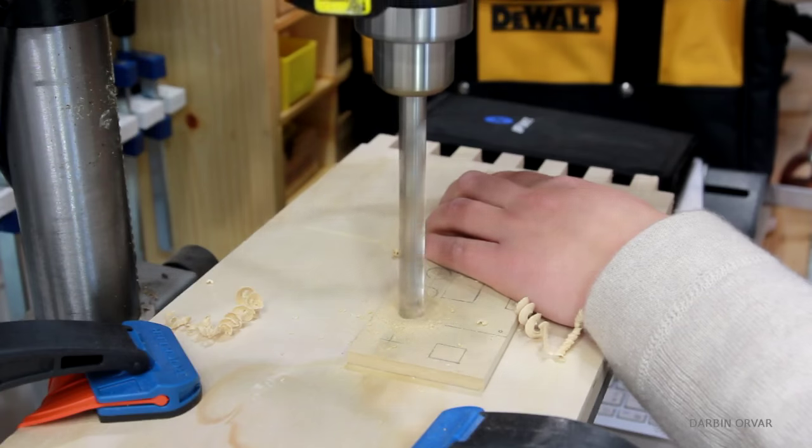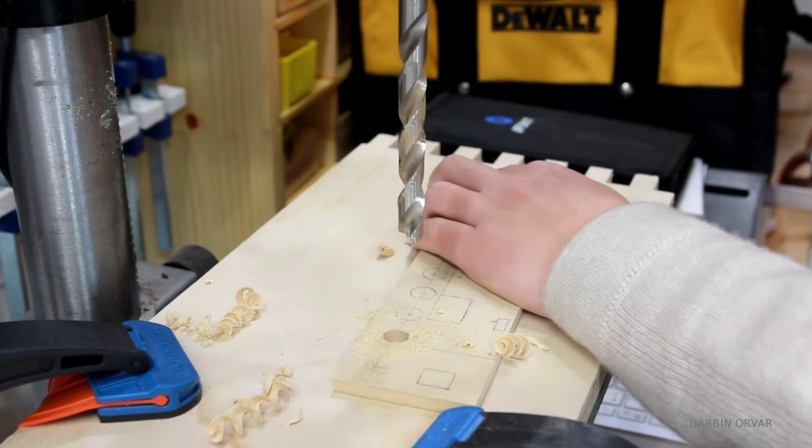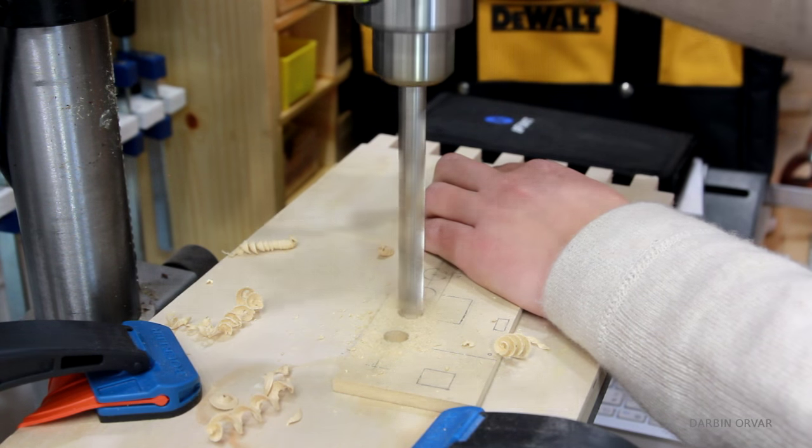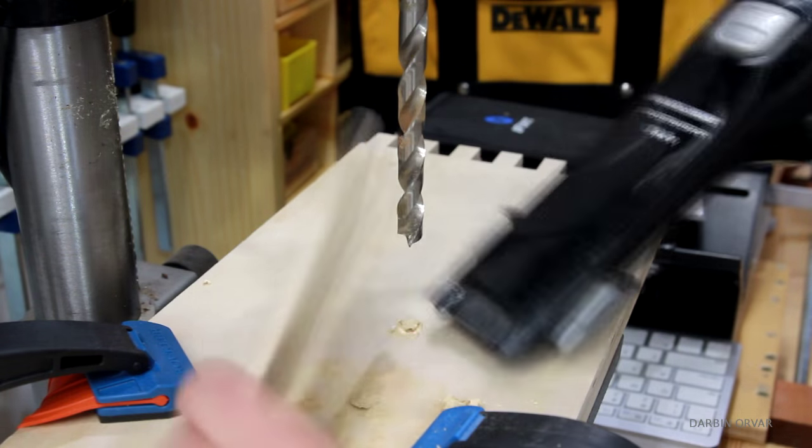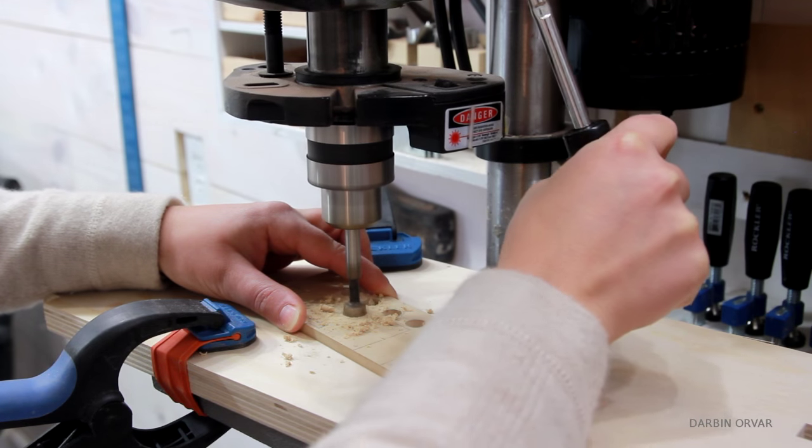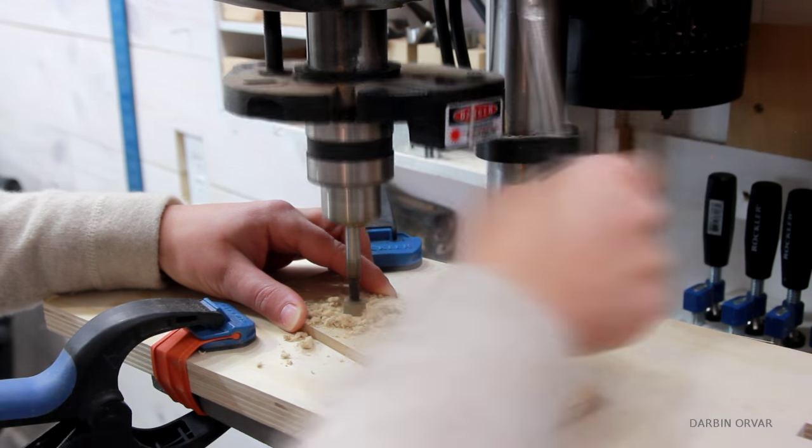So I'm starting with drilling out the holes for the outlets, using the drill press and a quarter inch bit. I'm also drilling holes in the center for where the screens will display, to remove some material.